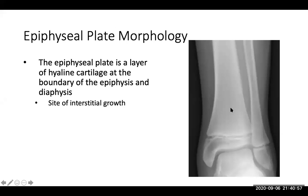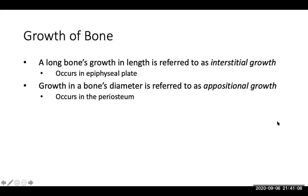The epiphyseal plate is a layer of hyaline cartilage at the boundary of the epiphysis and diaphysis — this is the site of interstitial growth. Growth of bone in length is referred to as interstitial growth, and it occurs at the epiphyseal plate. Growth in bone diameter — when a bone gets thicker — is referred to as appositional growth, and this occurs at the periosteum, the exterior layer.